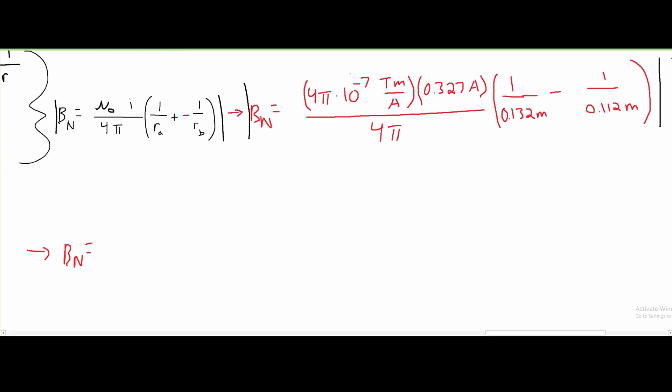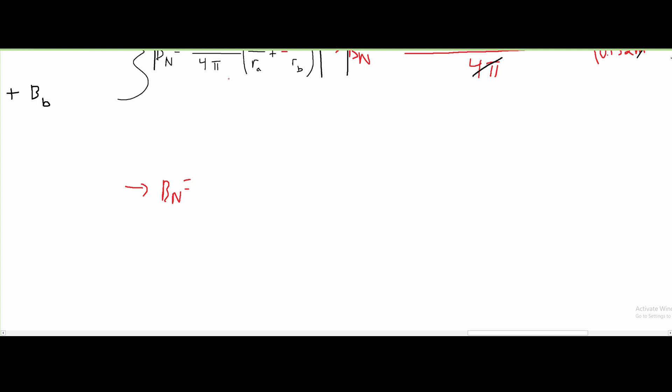Before we start putting this into the calculator, we can cancel out our 4π's to make this simpler. We can also cancel out our amplitudes and cancel out our meters. After we plug this into our calculator, we get that our B_N is approximately 4.4 times 10^-8 Teslas.